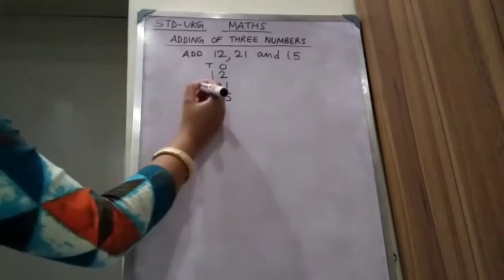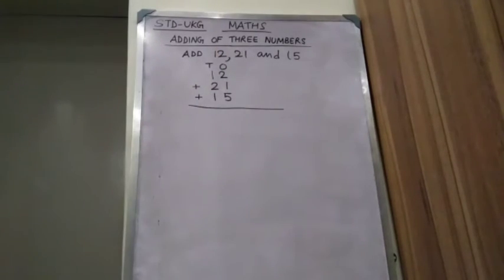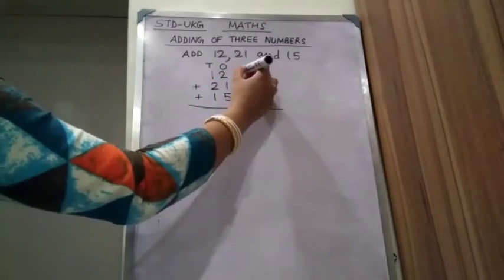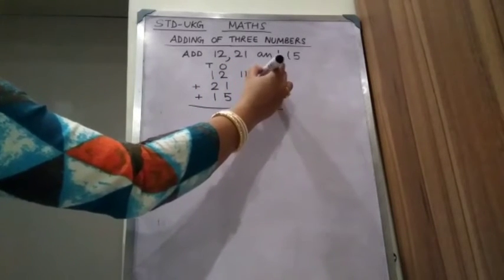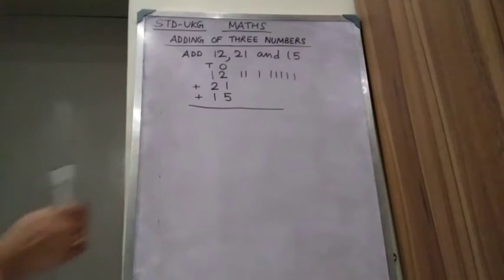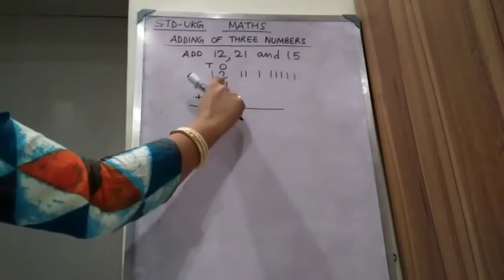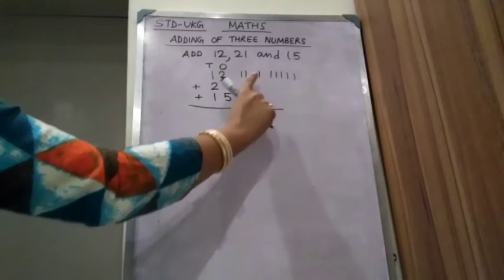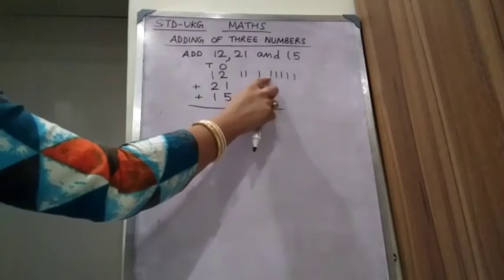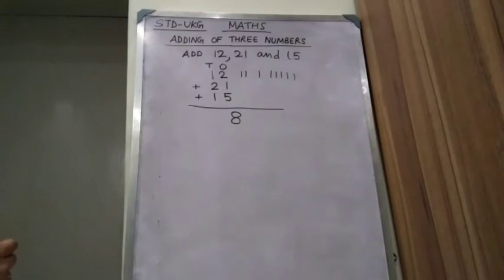So we have to add this. First, we will add the ones column. See the numbers in the ones column: 2, 1, 5. Count: 1, 2, 3, 4, 5. How many numbers are there? Three numbers. First number is 2, second number is 1, and third number is 5. Now count all together: 2, 3, 4, 5, 6, 7, 8.